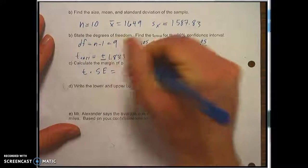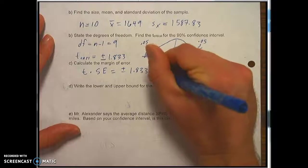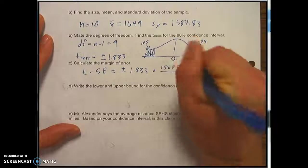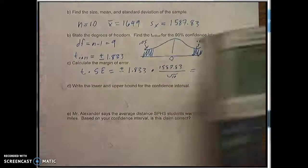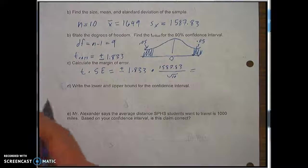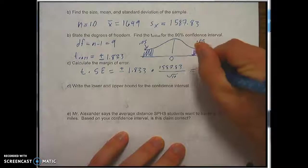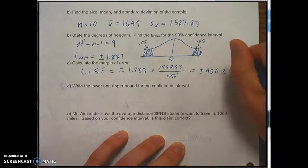And our t is positive and negative 1.833 times the standard error is 1587.83 divided by the square root of 10. So let's just calculate that really quick. 1.833 times 1587.83 divided by the square root of 10. That gives me positive and negative 920.38 miles.